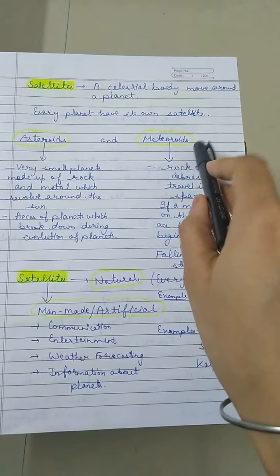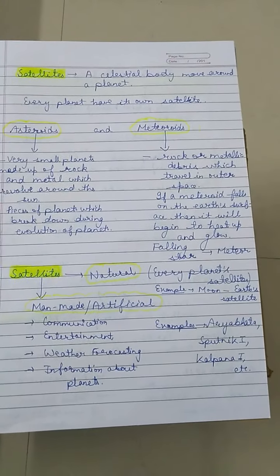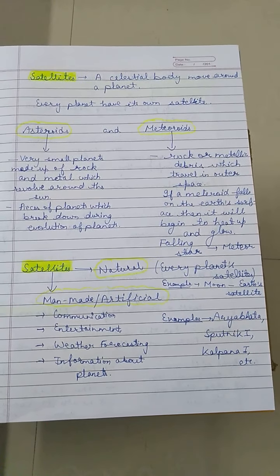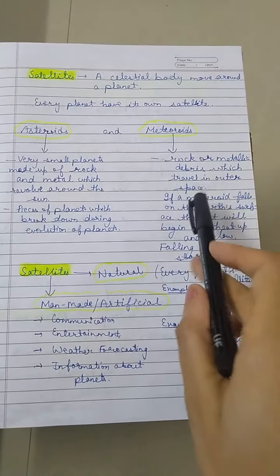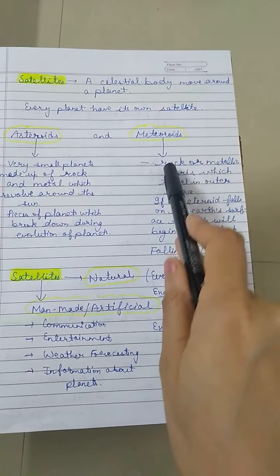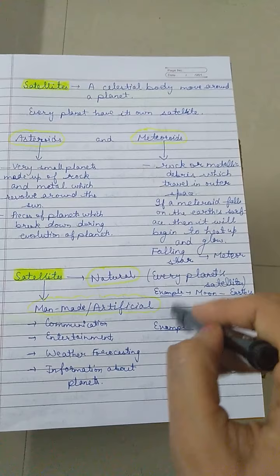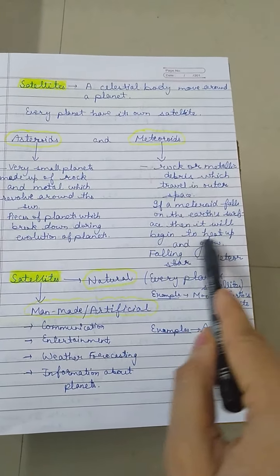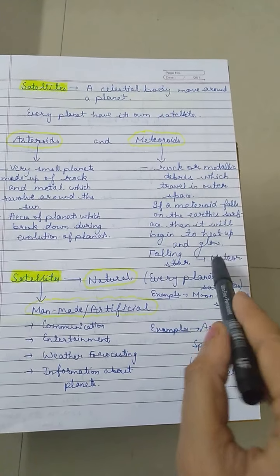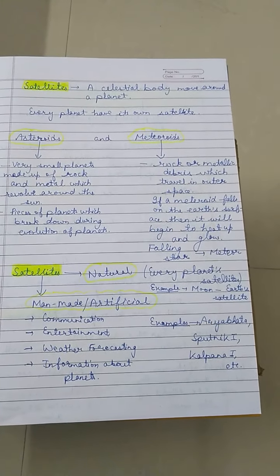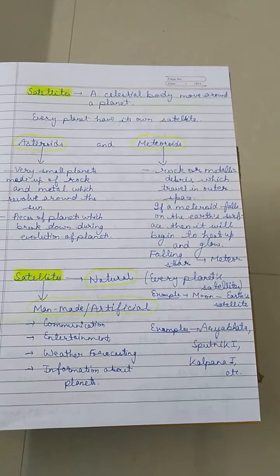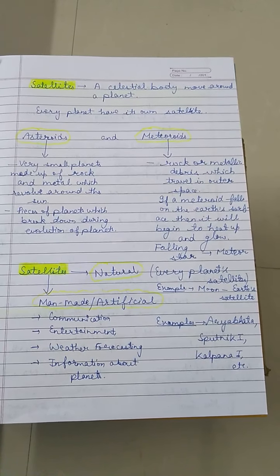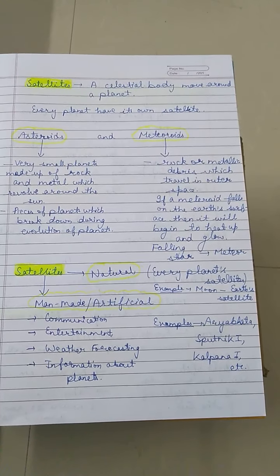Now, here come the meteoroids. Meteoroids are rock or metallic debris — debris means the leftover part of something which got damaged — which travel in outer space. These are made up of rock or metals. And if a meteoroid falls on the Earth's surface, it will begin to heat up and glow, producing a shining light from that surface.